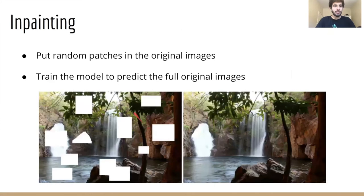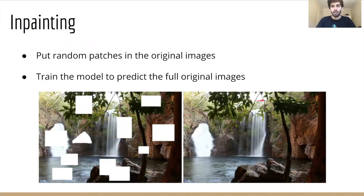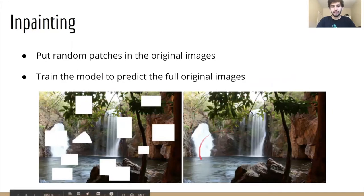In our second method, we use the self-supervised learning technique known as inpainting. In inpainting, we generate random patches in the input images and we train the critic to try and predict the full image by filling in those patches.